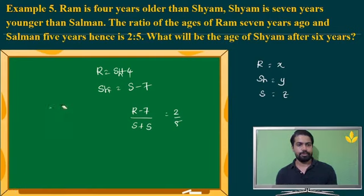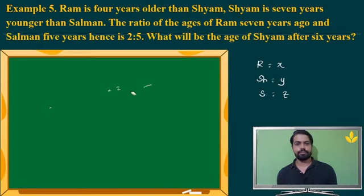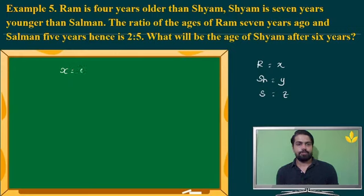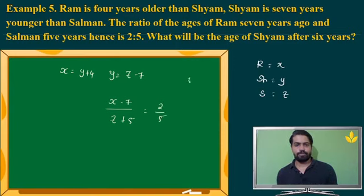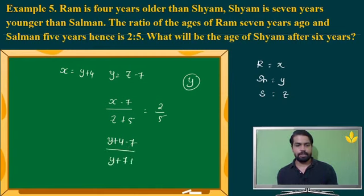I am going to rewrite the information in terms of X, Y, Z. X is equal to Y plus 4, and Y is equal to Z minus 7. They are given X minus 7 divided by Z plus 5 is equal to 2 by 5. I have to find Y first, so I write everything in terms of Y. X minus 7 becomes Y plus 4 minus 7. Z can be written as Y plus 7, so Z plus 5 becomes Y plus 12. Now I can solve this equation to find Y.